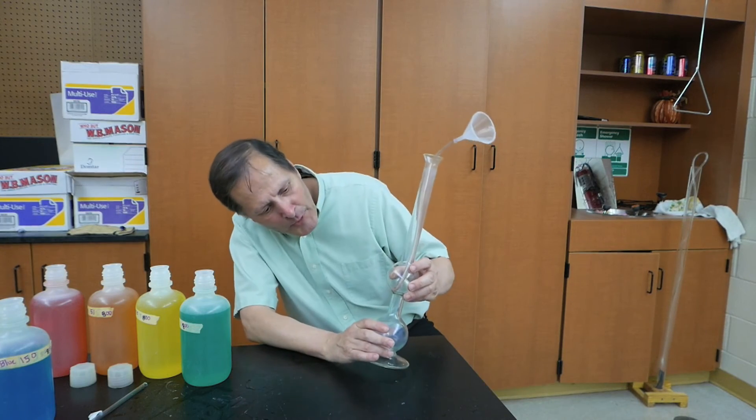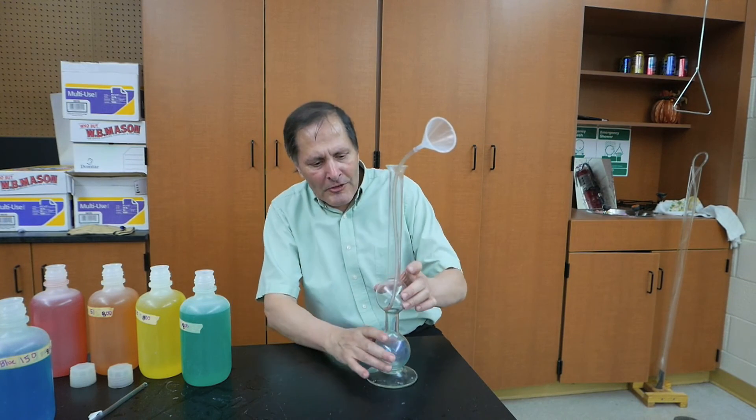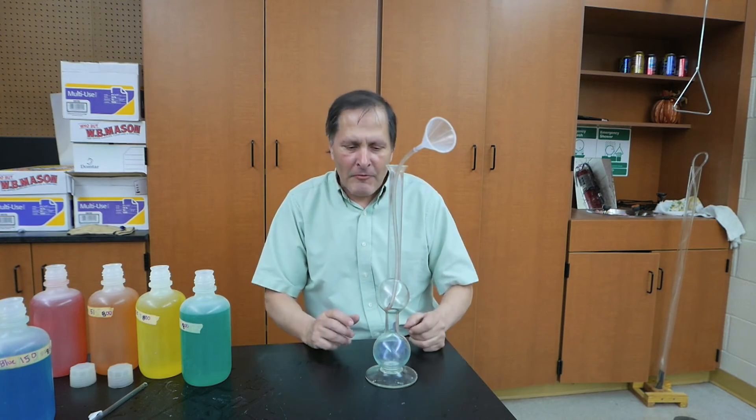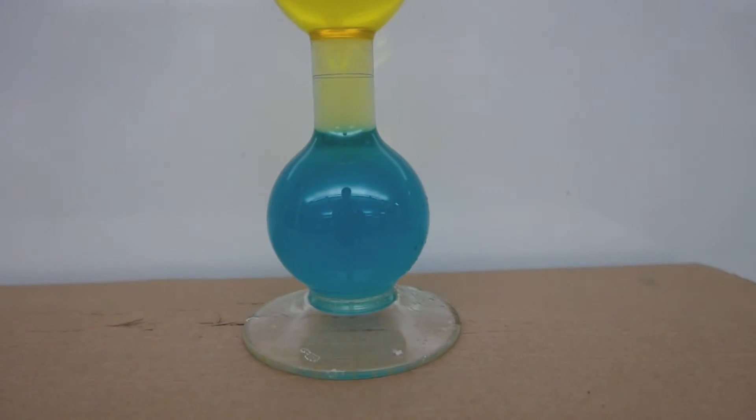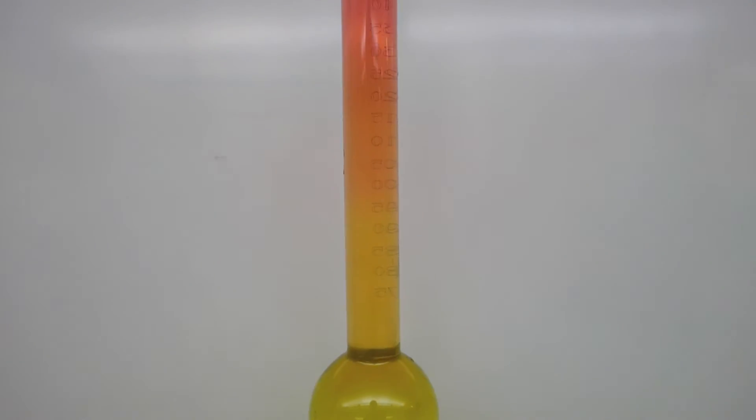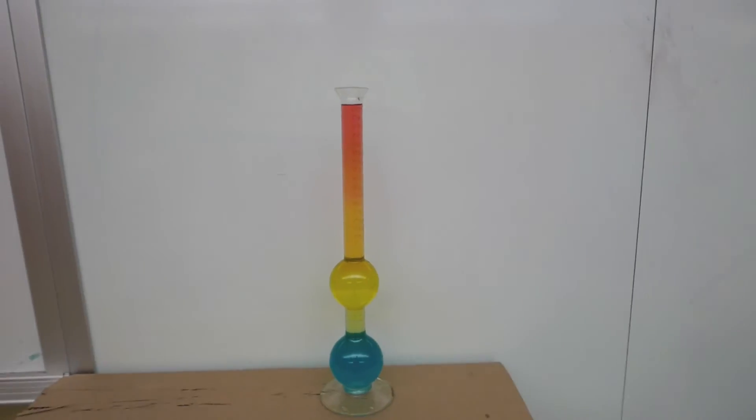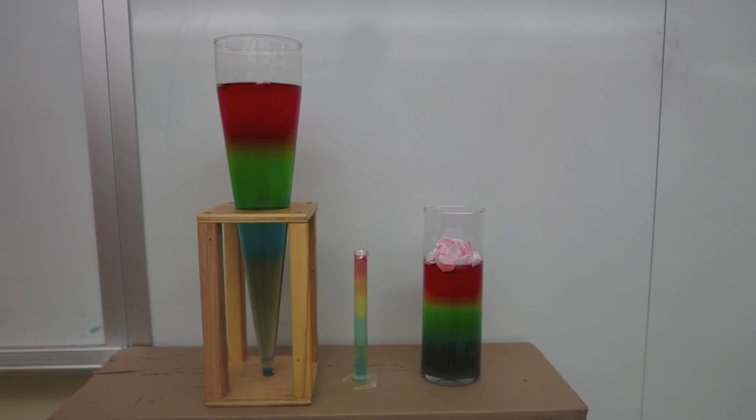Now here's a really odd shaped graduated cylinder. I have no idea what these bulbs are for, but I like the shape of it, so we're going to try and make one in here. I had some difficulty keeping the colors separate, so I just went with blue, yellow, and red. I decided to try it in a few more containers I had sitting around the room.